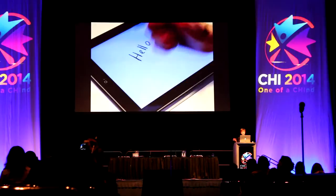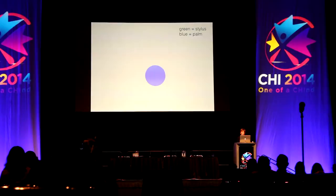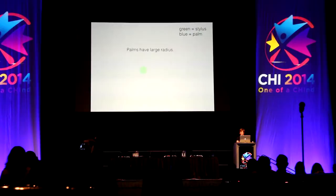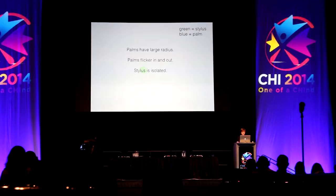To explain how this works, let's look at what the touchscreen sees as I write 'hello.' Here's a recording of the actual touch events. I've labeled the palm touches as blue and the stylus as green. A couple things pop out. First, palms tend to have a fairly large touch radius. Also, palms tend to flicker in and out while the stylus appears consistently. While palms tend to be clustered together — because the touch driver tries to break them into smaller touches — the stylus tends to be more isolated. And while palms don't move very much, styluses tend to have longer, smoother trajectories.